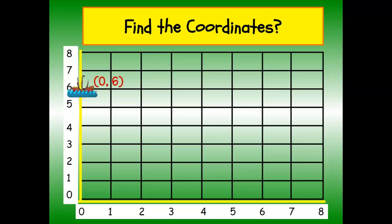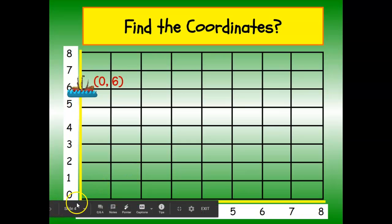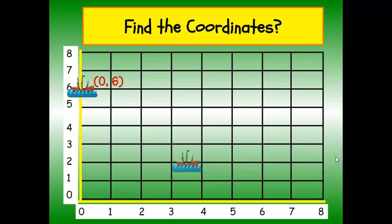And you should have said zero, six, because we went to our elevator is zero, and we went up to floor six. Next boat. Think about it. Look at it. Should be two, two.